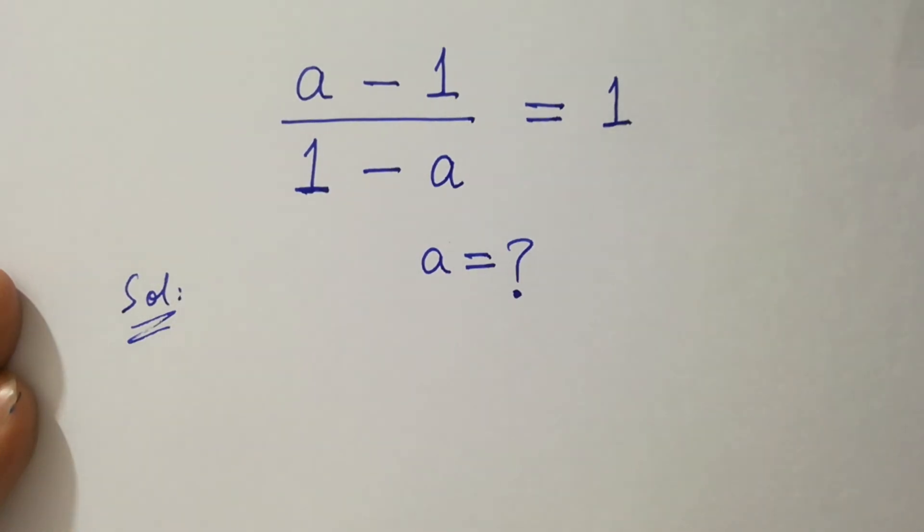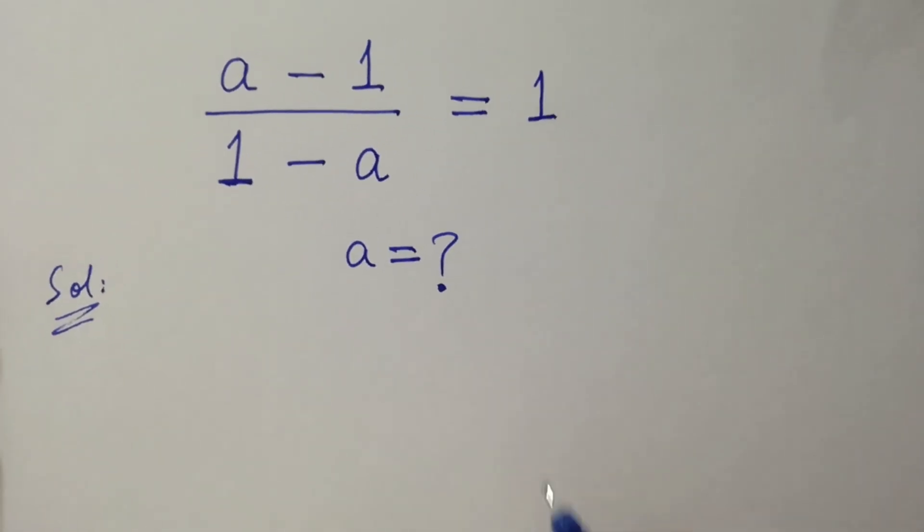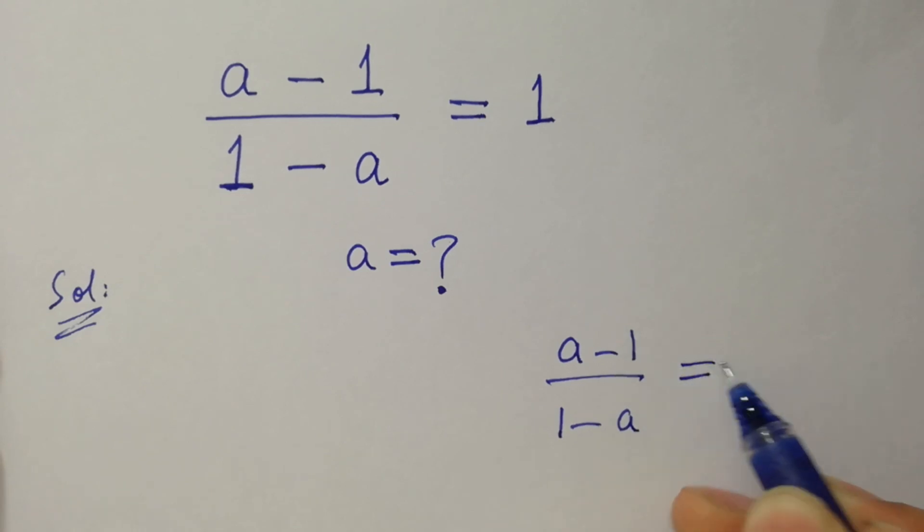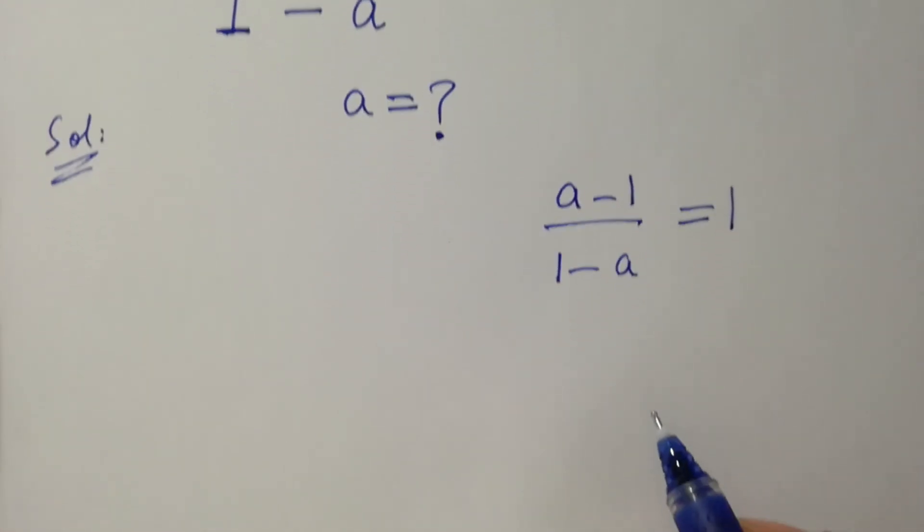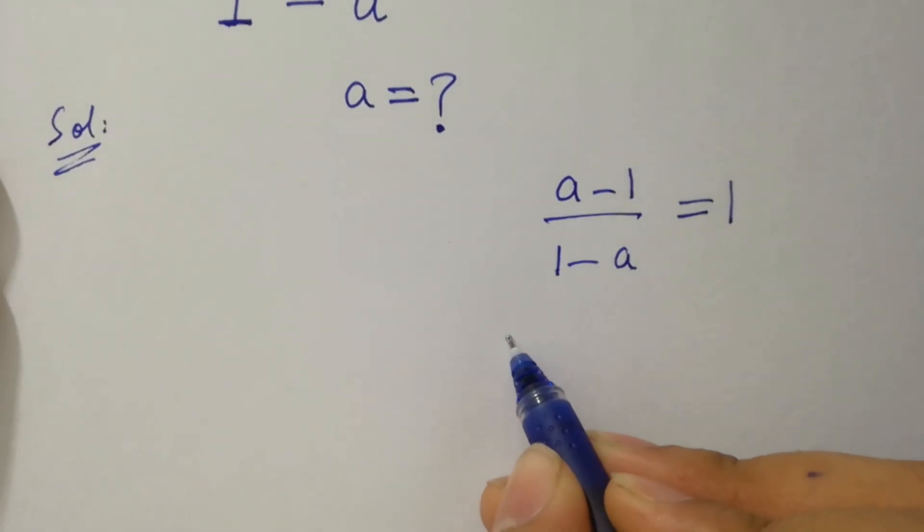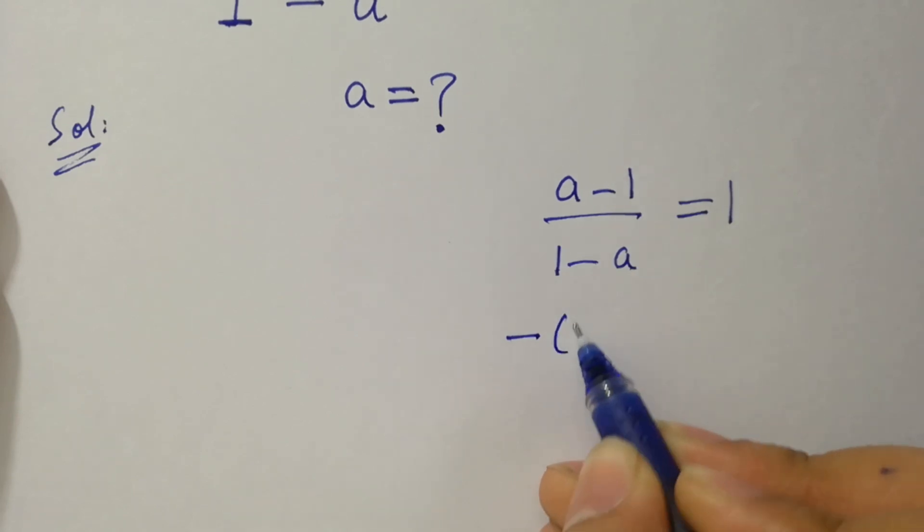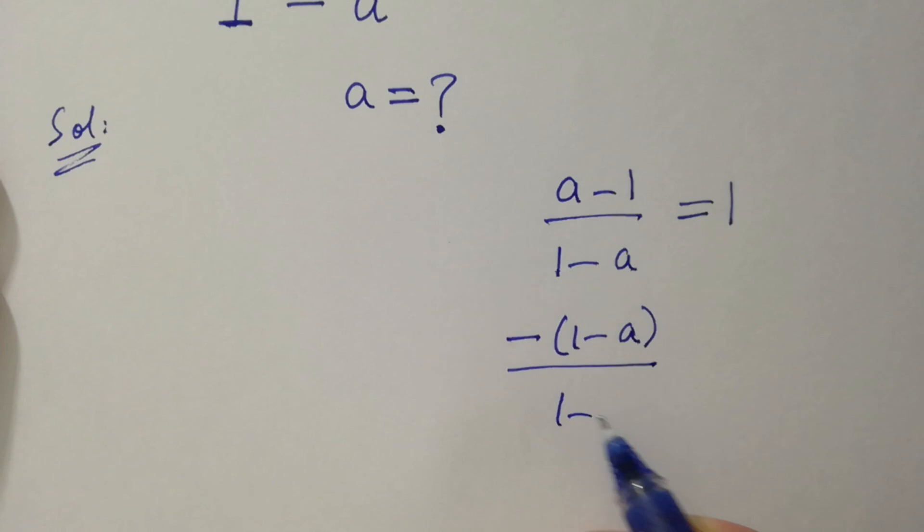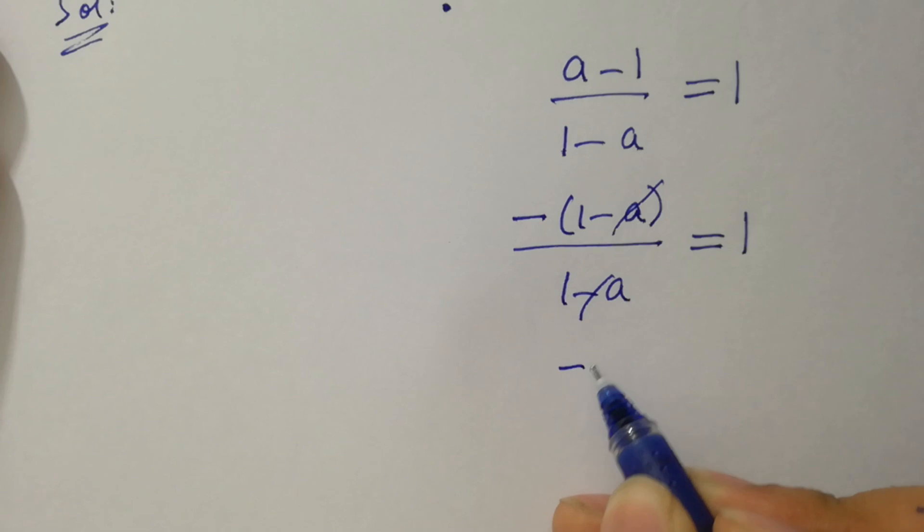If you see this problem, (a-1)/(1-a) = 1, which is the same as -(1-a)/(1-a) = 1. The (1-a) cancels, we have -1 = 1, where -1 is not equal to 1.